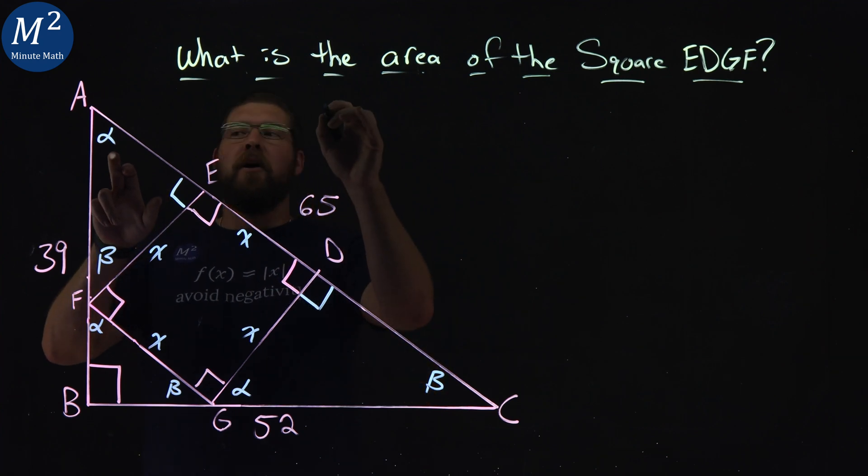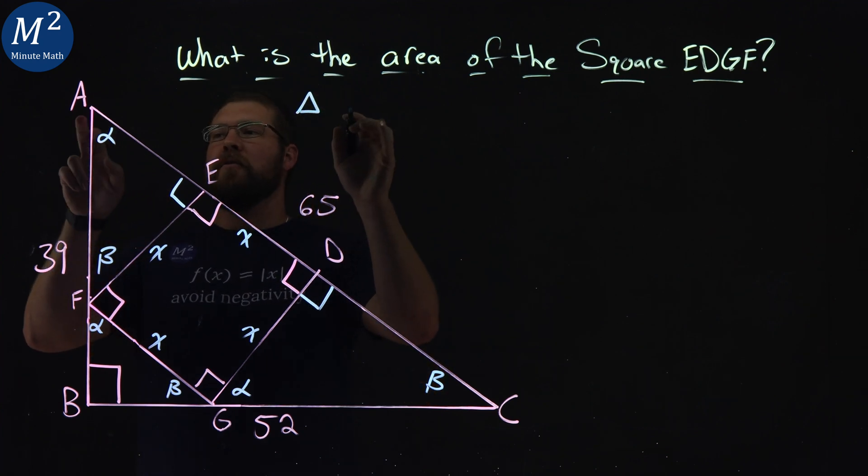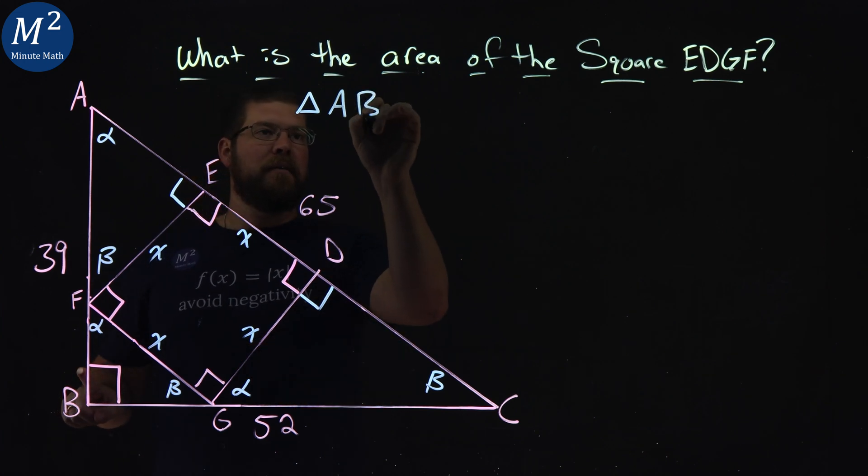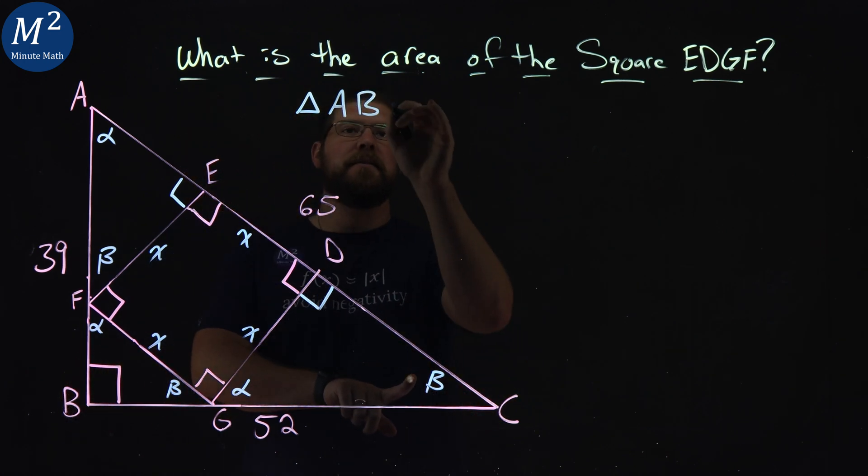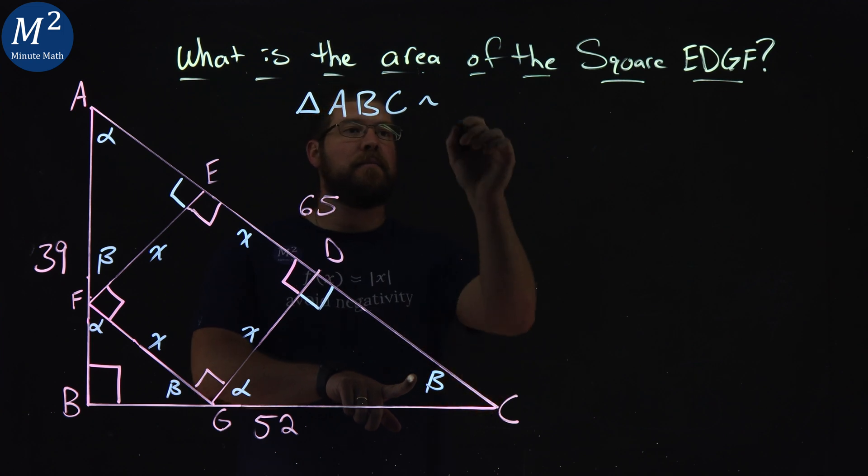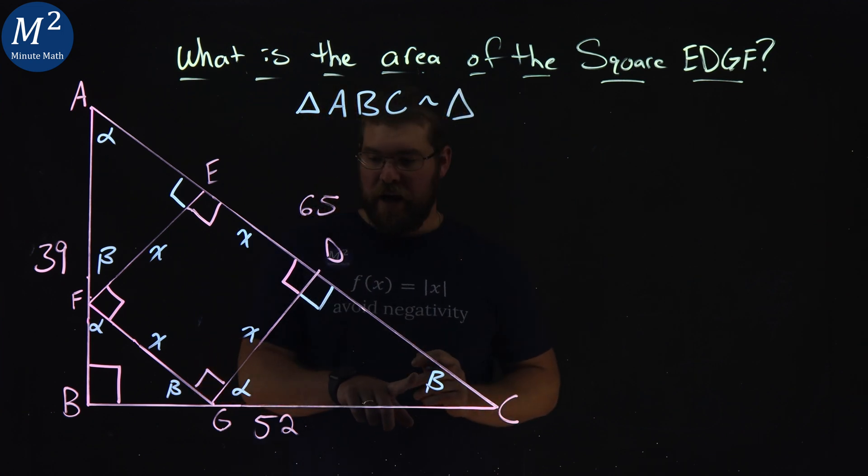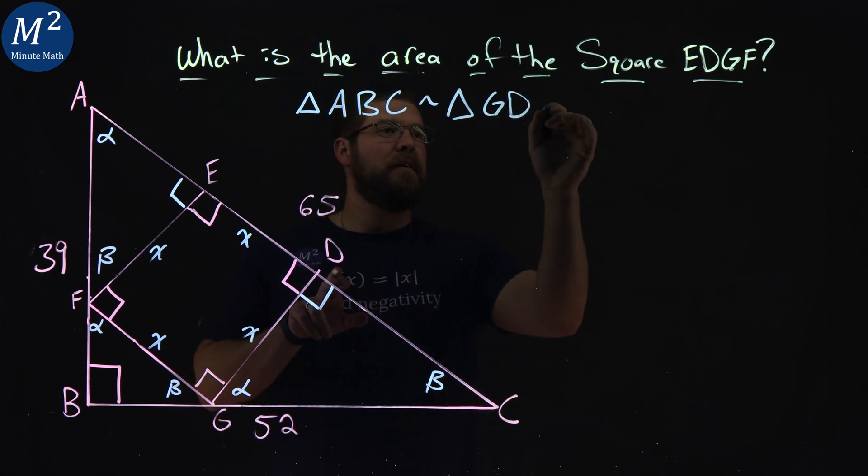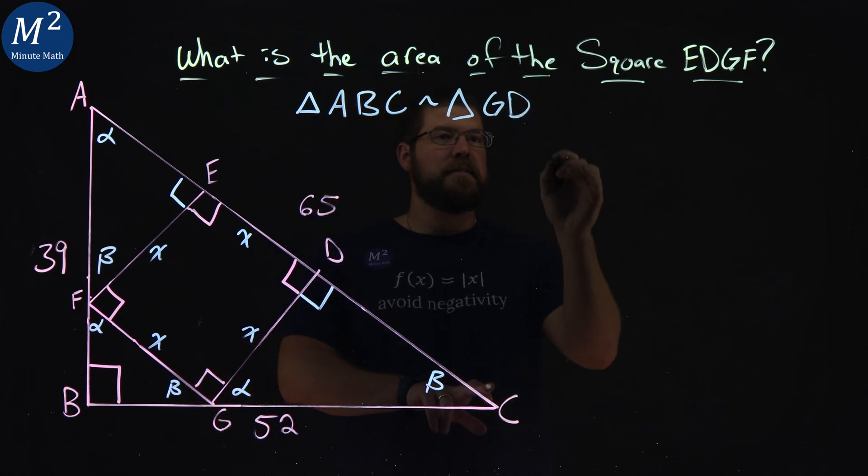Let's start with our angle. So we have our triangle, we'll start with alpha. So this angle A to the right angle B and then the beta C. That's going to be similar to triangle, let's start with the alpha here. In this case it's point G, G to the 90 degrees D, to then beta C.